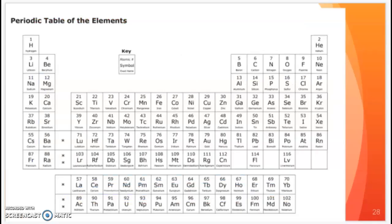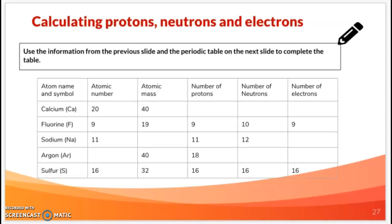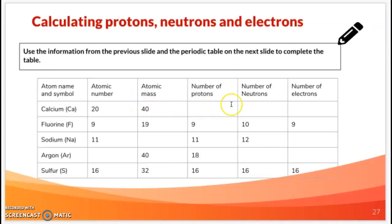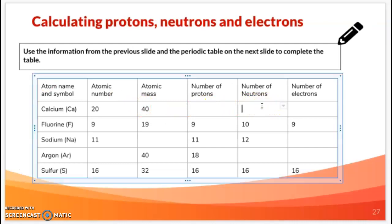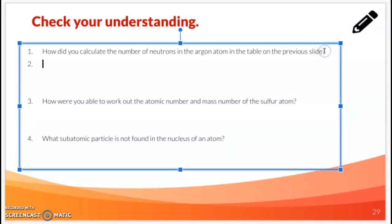Now this is the periodic table that's simplified. It's only got the atomic numbers there to keep life simple for you. Let's try these questions out. How do you work out the number of neutrons in the argon atom in the previous slide? To work out the number of neutrons, remember we use the subtraction. So what we did was we did 40 take away 20, which gives you the 20. You have to subtract the mass number from the atomic number.